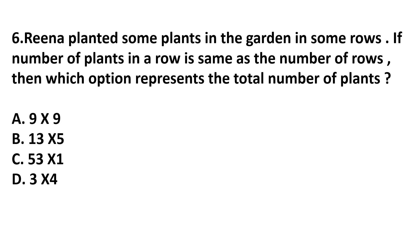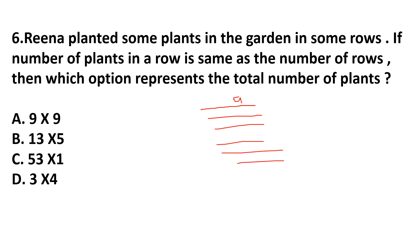Question number 6. Dina planted some plants in the garden. The number of plants in a row is the same as the number of rows. Then which option represents the total number of plants? Since the plants in a row equal the number of rows, both numbers are the same, so we multiply them. Answer is option A, because the number of rows and number of plants per row are the same.